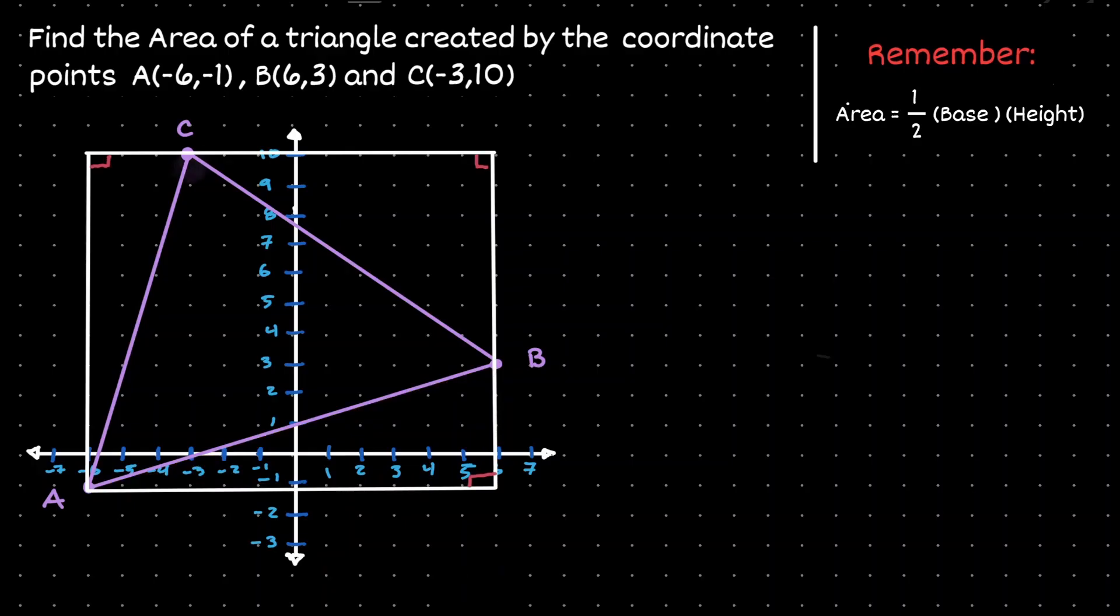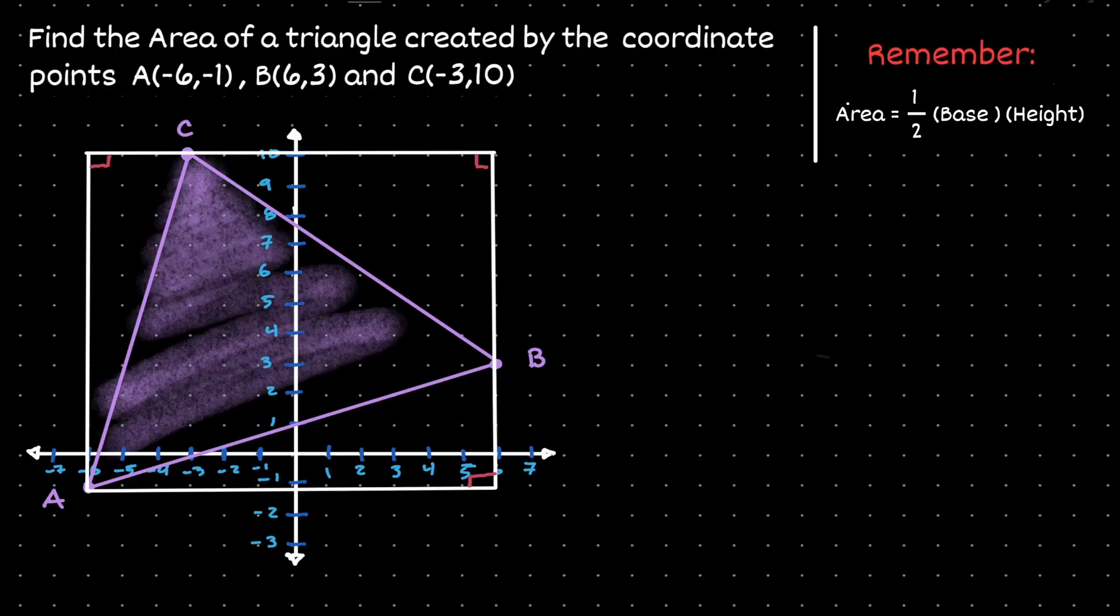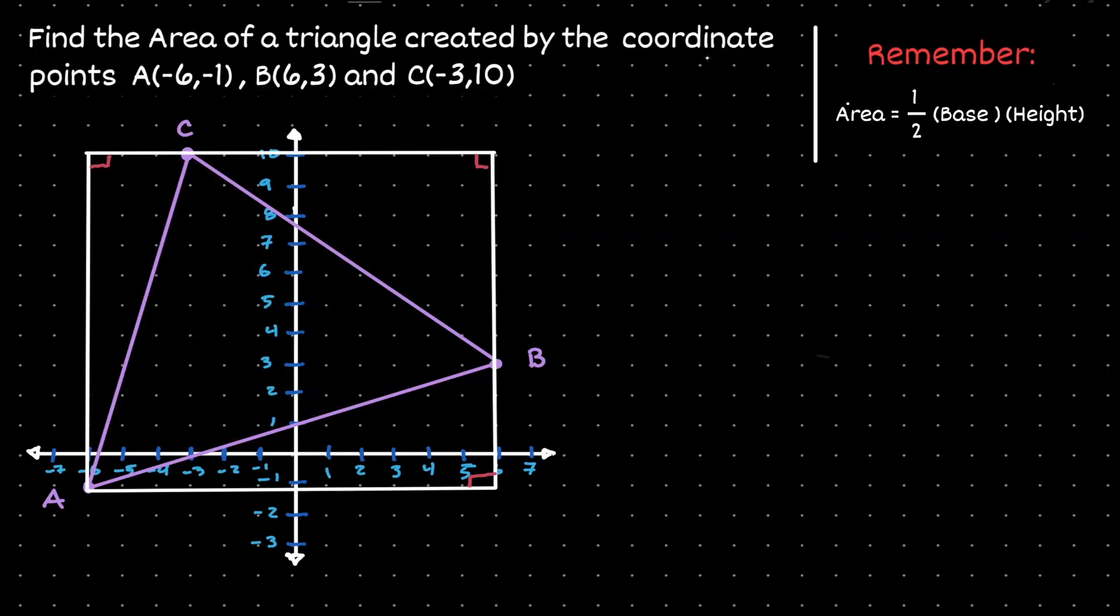So if we're interested in the area inside this purple triangle, then what we can do is find the area of the rectangle and subtract the area of those three right triangles that we have defined.